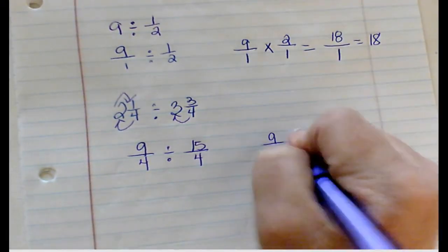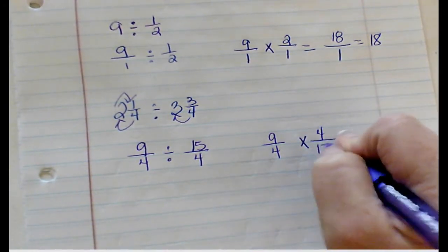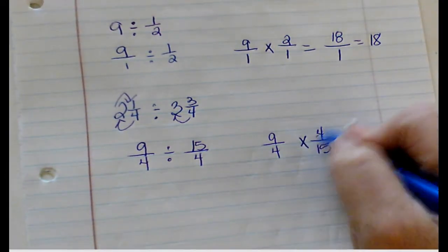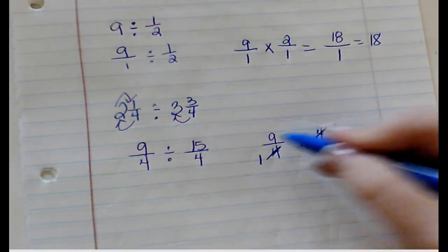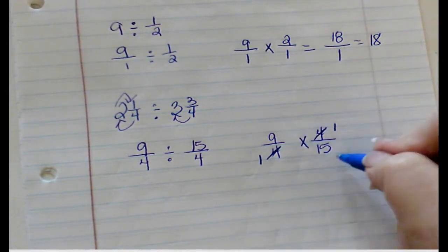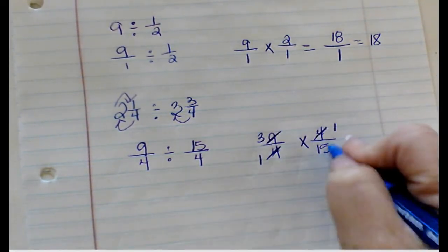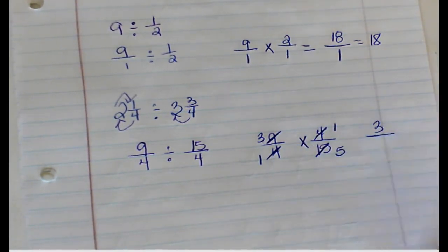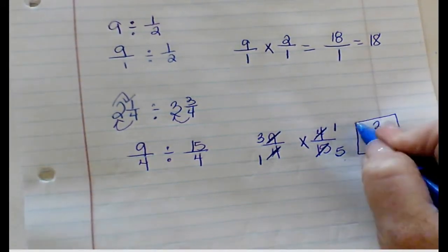They are both in improper fraction, so now we can do our keep, change, and flip. Again, I look diagonal. 4 and 4 - they are both the same, so I know I can divide them both by 4. 4 divided by 4 is 1, 4 divided by 4 is 1. Looking across, 9 and 15 - what can I divide 9 and 15 both by? 3. 9 divided by 3 is 3, 15 divided by 3 is 5. 3 times 1 is 3, 1 times 5 is 5. So my answer is 3/5.